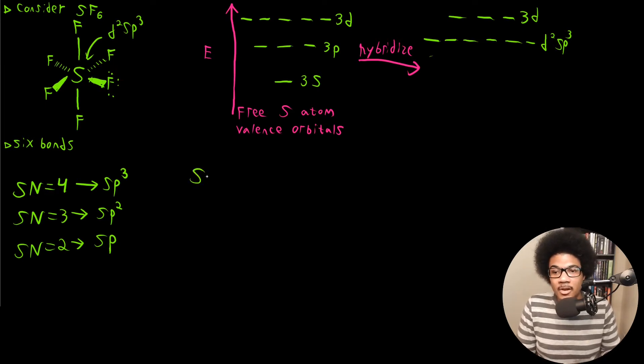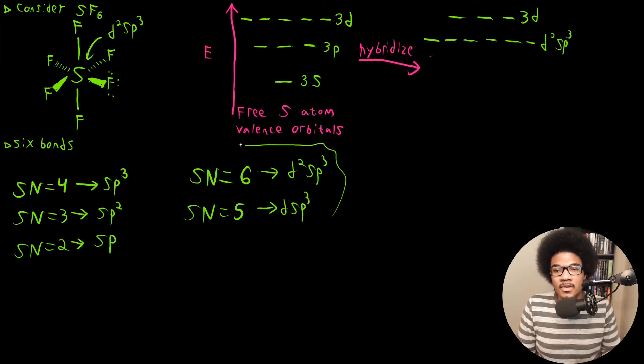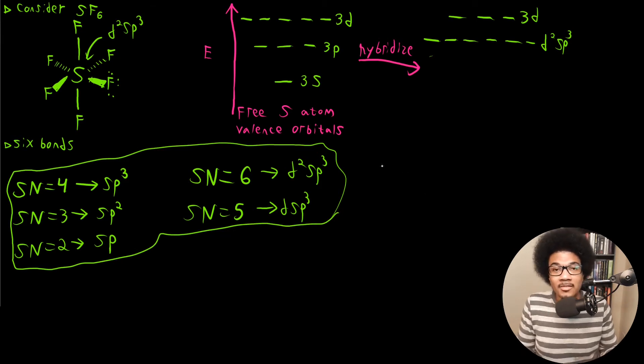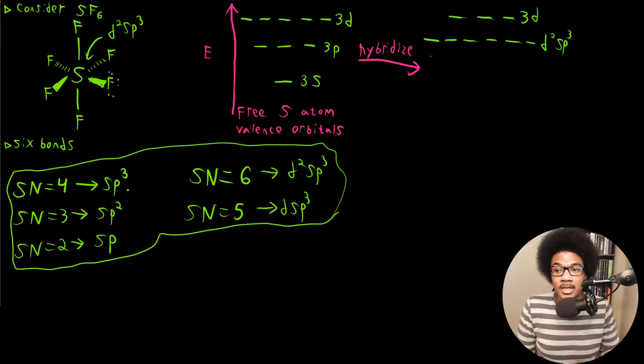Now, if you have a steric number of six, as we do with the sulfur here, that's going to be your D2SP3. And if you have a steric number of five, that's going to be DSP3. So you can use this as a general way to determine the hybridization at a given atomic center based on its steric number. So if you calculate the steric number, adding up the bonded atoms and the lone pairs, you should get an accurate representation of the hybridization at that atomic center.